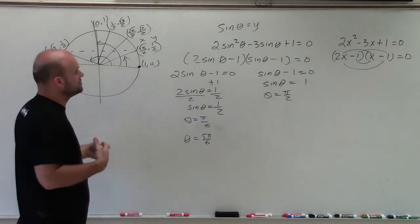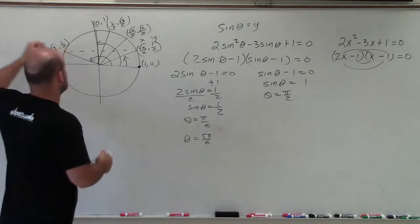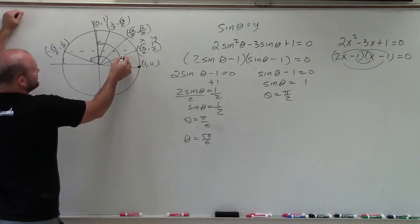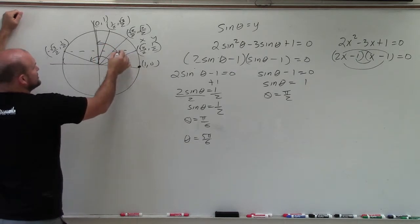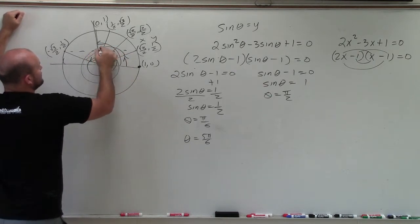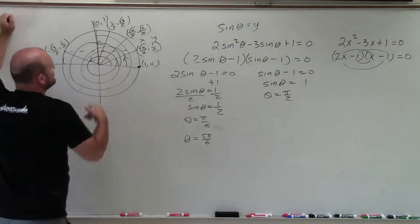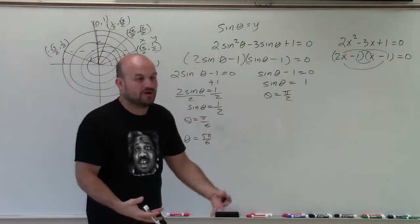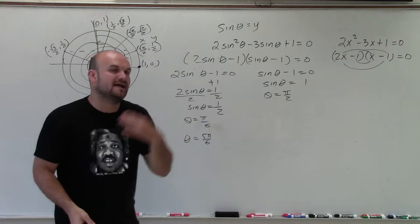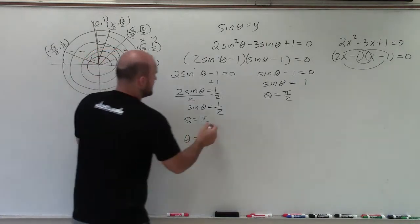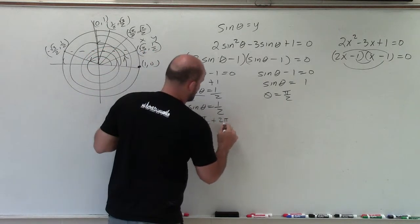Now I want to determine all of the solutions. So for each one of these angles, all I need to do to find all the solutions is just keep on adding revolutions of 2 pi. And if I keep on adding 2 pi, I'm going to keep on going back to the original angle, and I'm going to keep on producing solutions.